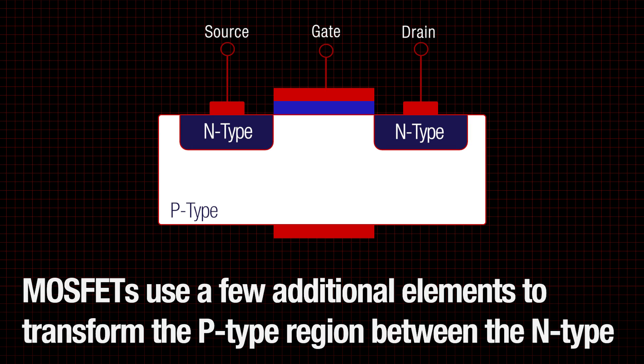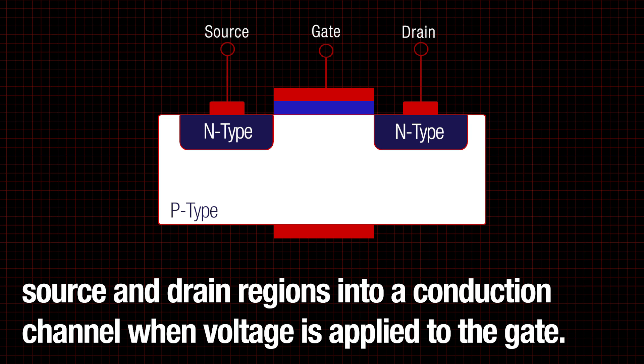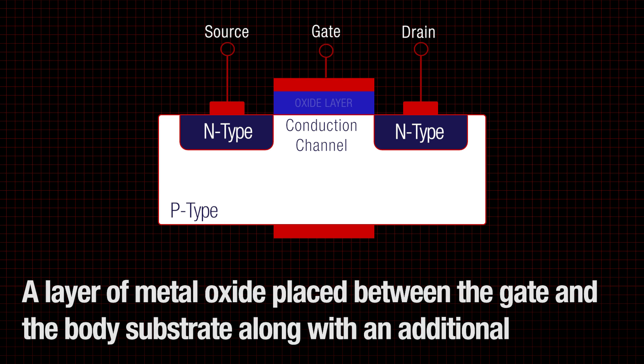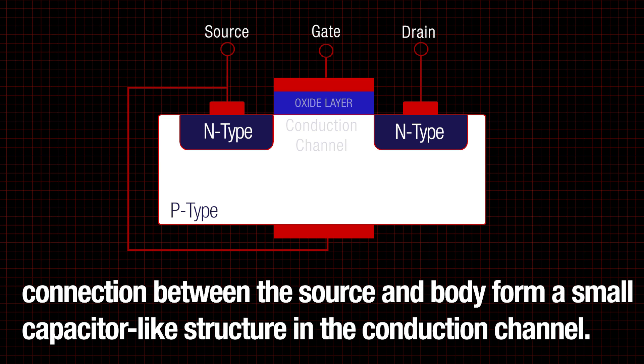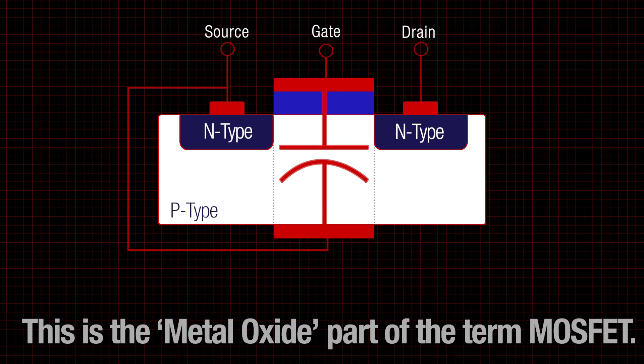MOSFETs use a few additional elements to transform the p-type region between the n-type source and drain regions into a conduction channel when voltage is applied to the gate. A layer of metal oxide placed between the gate and the body substrate, along with an additional connection between the source and body, forms a small capacitor-like structure in the conduction channel. This is the metal oxide part in the term MOSFET.